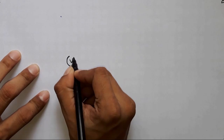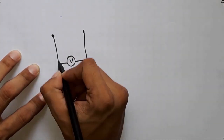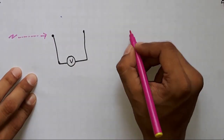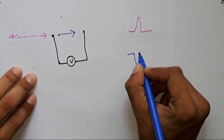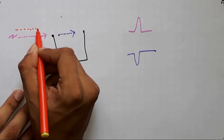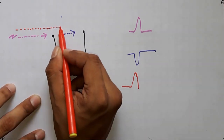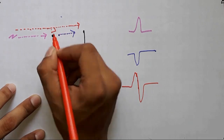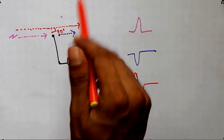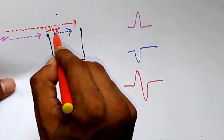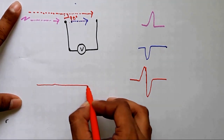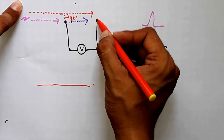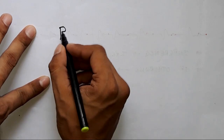Leads are essentially voltmeters that measure potential difference. If the electrical wave moves towards a pole, it shows a positive deflection; if it moves away, it shows a negative deflection. If an electrical impulse moves perpendicular — piercing through the paper — both poles reach the same potential at the same time, so the voltmeter reads a straight line or equipotential.